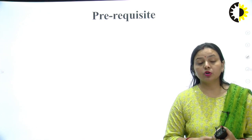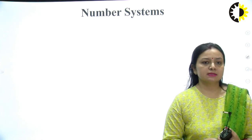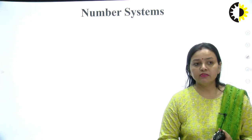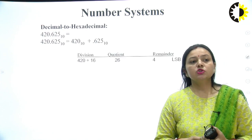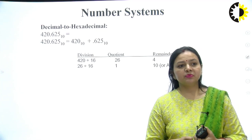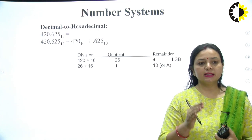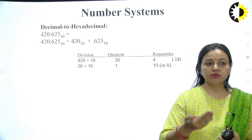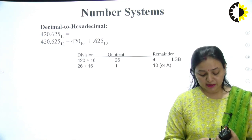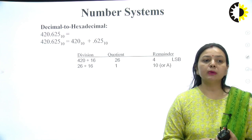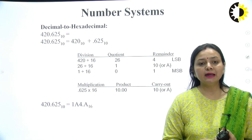As a prerequisite for studying microprocessors, you need knowledge of number systems — basic conversion from decimal to hexadecimal. To convert a decimal number to binary, divide by 2; to convert decimal to hexadecimal, divide by 16. For the decimal fractional part, you multiply instead. These conversions are required as a prerequisite for a complete understanding of microprocessors.